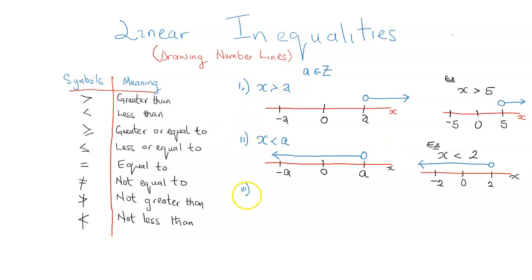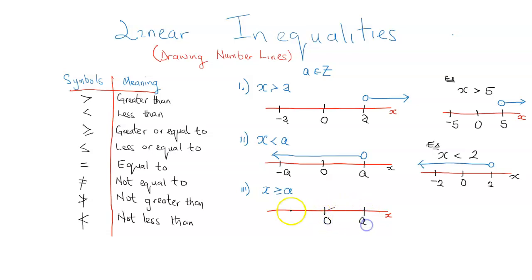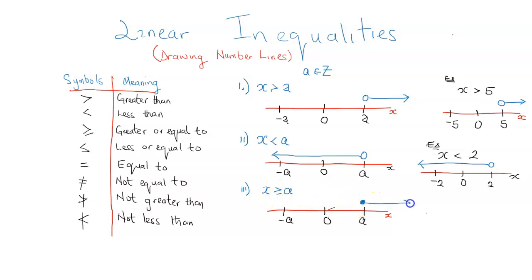The third case: x greater than or equal to a. This is going to be slightly different from the first one. As usual, we draw a straight line representing the values of x, with 0 as the reference point, a to the right, and negative a if we choose. Because there is an equal to sign attached to this inequality, the circle is going to be shaded. This is how greater than or equal to differs from greater than. The circle is shaded, and the arrow points to the right.